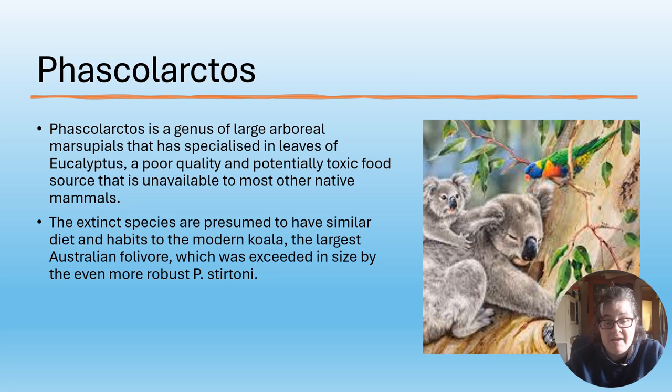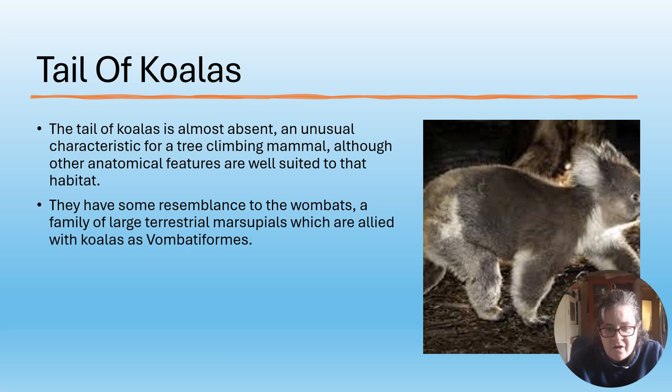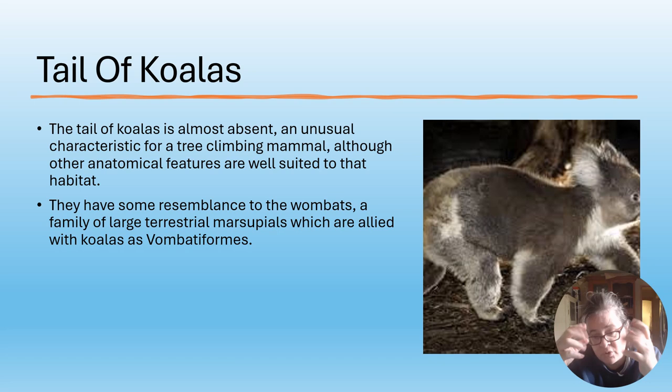Koalas pretty much exist on eucalyptus leaves. The extinct species are presumed to have similar diets and habitats to the modern koala. The koala's tail is almost absent - an unusual characteristic for a tree-climbing mammal, although other anatomical features such as its claws and paws are well suited to the habitat. There are some resemblances to the wombats, a family of terrestrial marsupials which are allied with koalas.